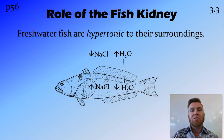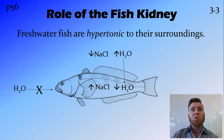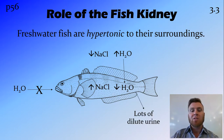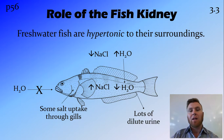This has a few follow-on effects. Firstly, freshwater fish don't have to drink water — they're getting enough water absorbed through osmosis through their skin. The other thing is that all this water coming in needs to be expelled somewhere, so they produce a large amount of dilute urine. Also through the gills, they absorb a little bit of salt.